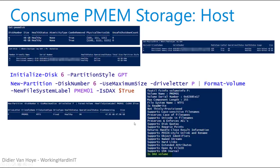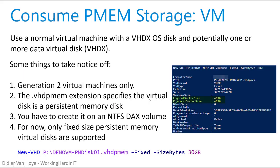To consume PMEM disks, run Get-PmemDisk or Get-Disk filtering by bus type SCM (storage class memory). Take those raw disks, initialize them with GPT, create a new partition, assign a drive letter, format it, give it a label, and choose whether to use DAX — true or false. With DAX enabled you get direct access to storage, which is very fast. For SQL Server log files this is great. To check if a volume is DAX, use fsutil.